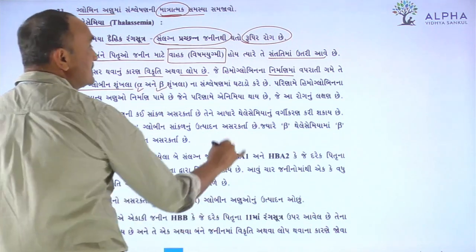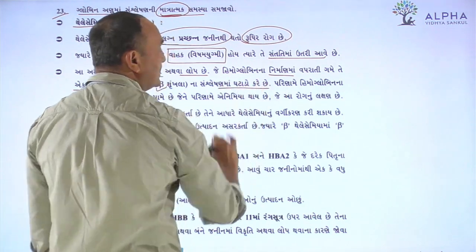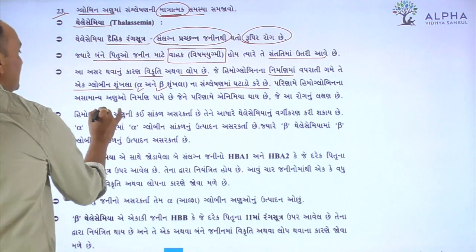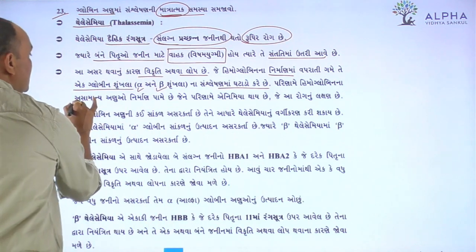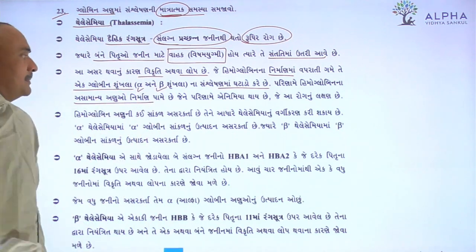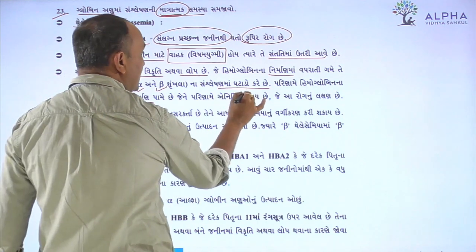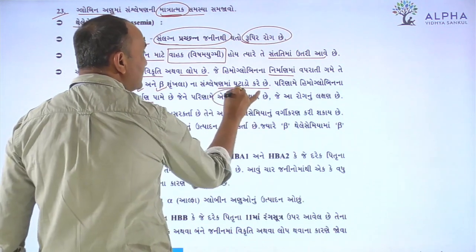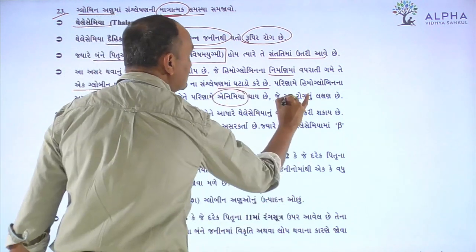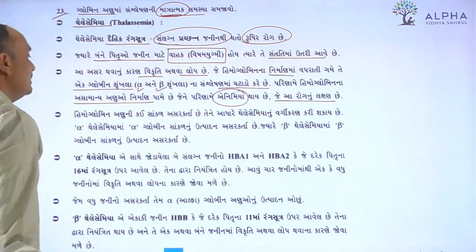It's a thalassemia type condition. Until all the people were — health out of hemoglobin — and in this case there is anemia, and this anemia is the most important part of this disease.